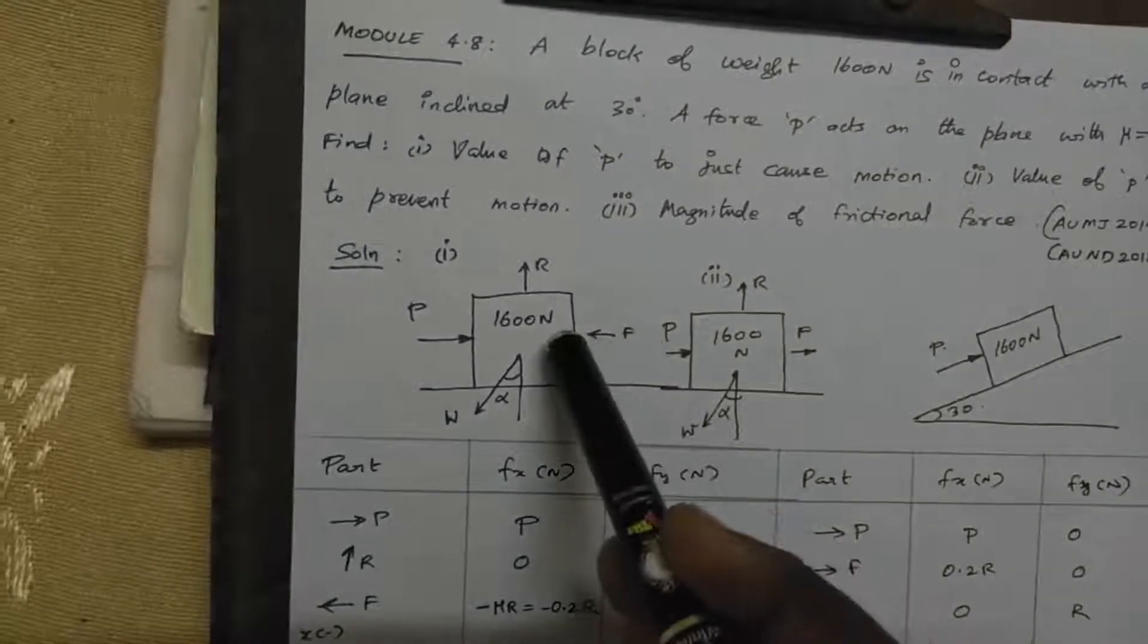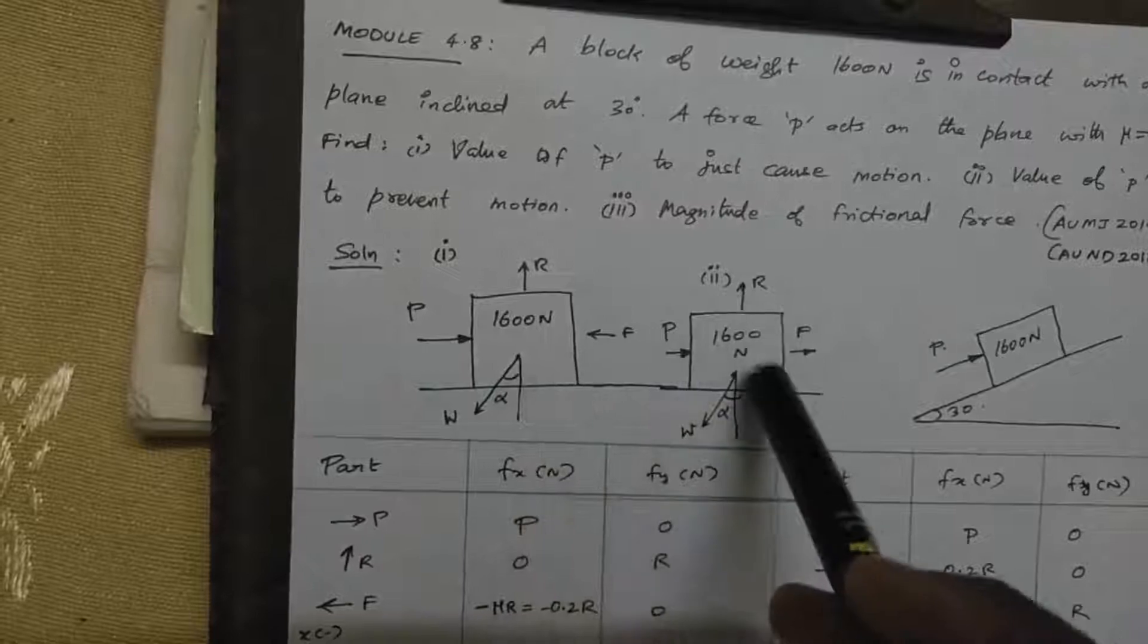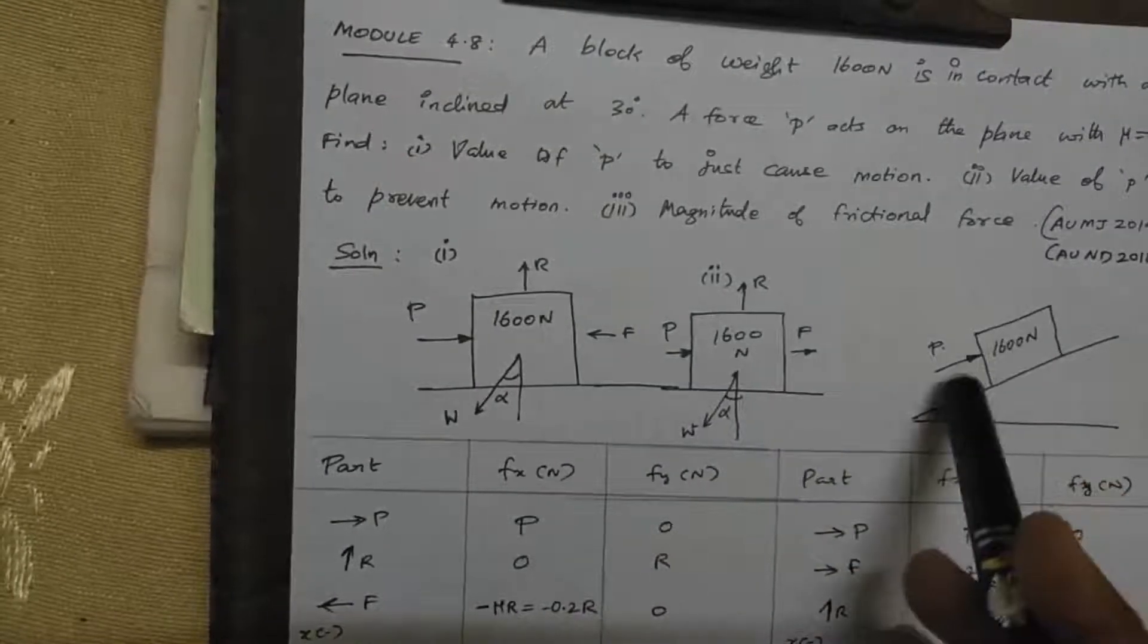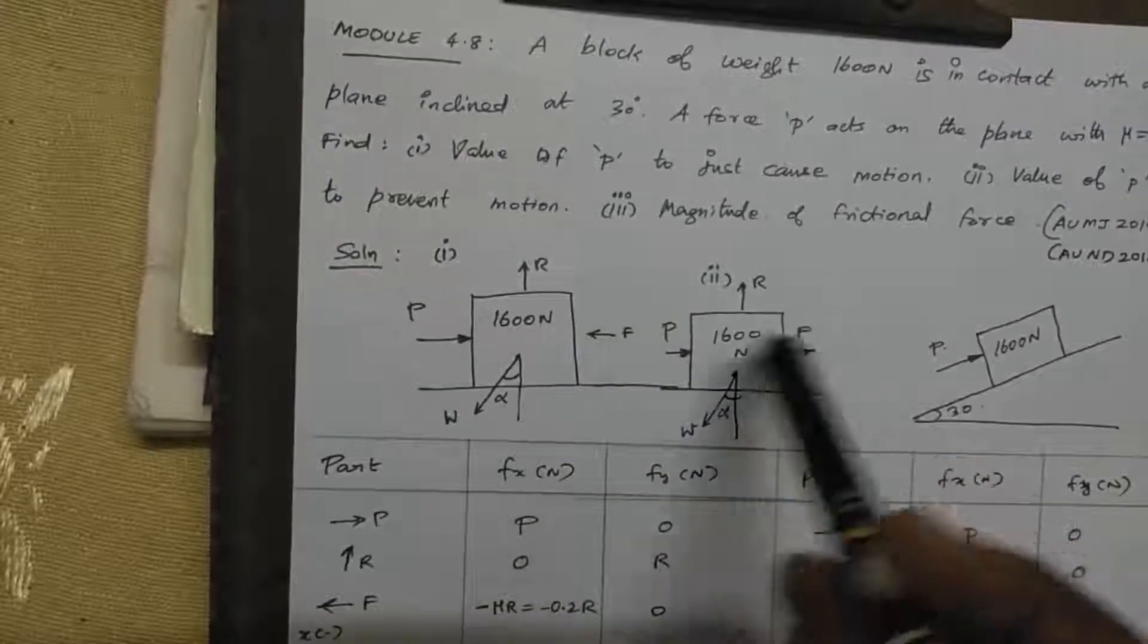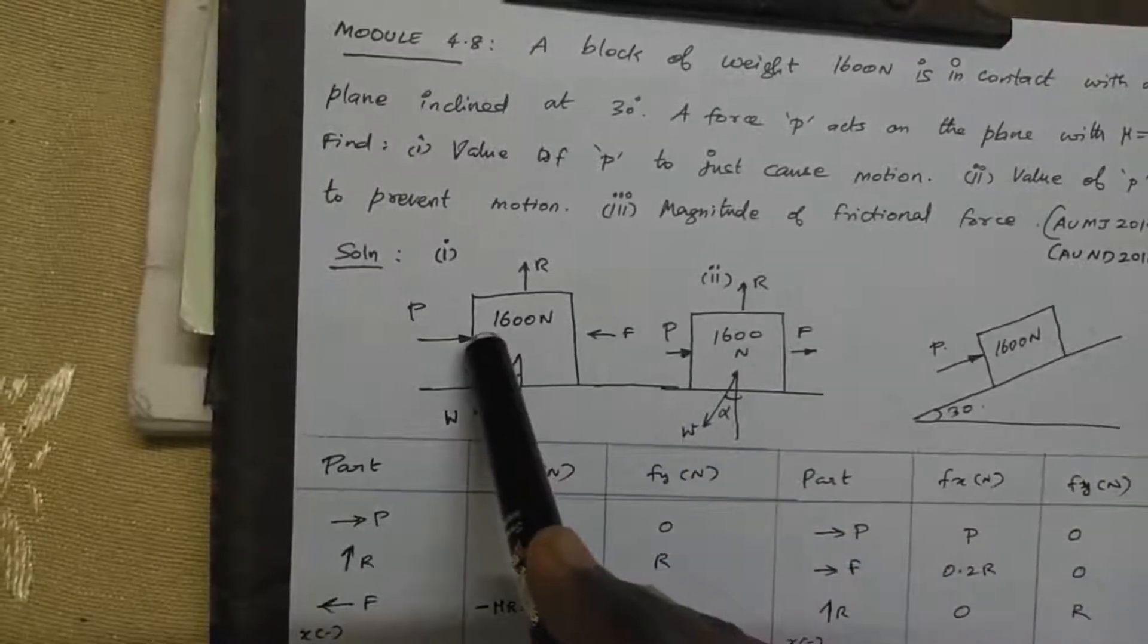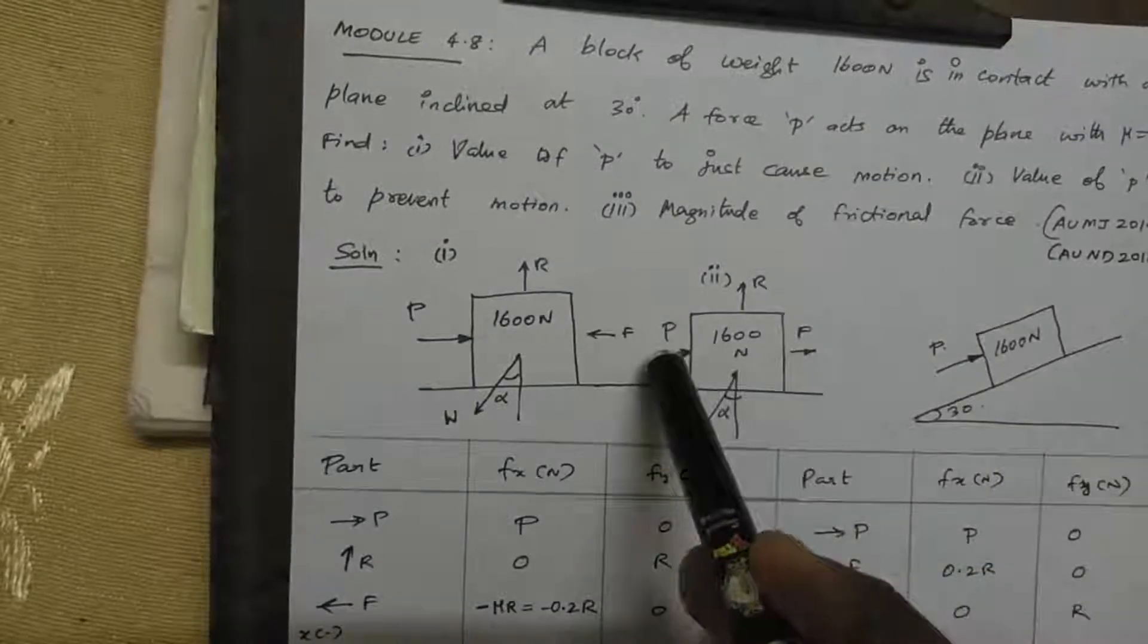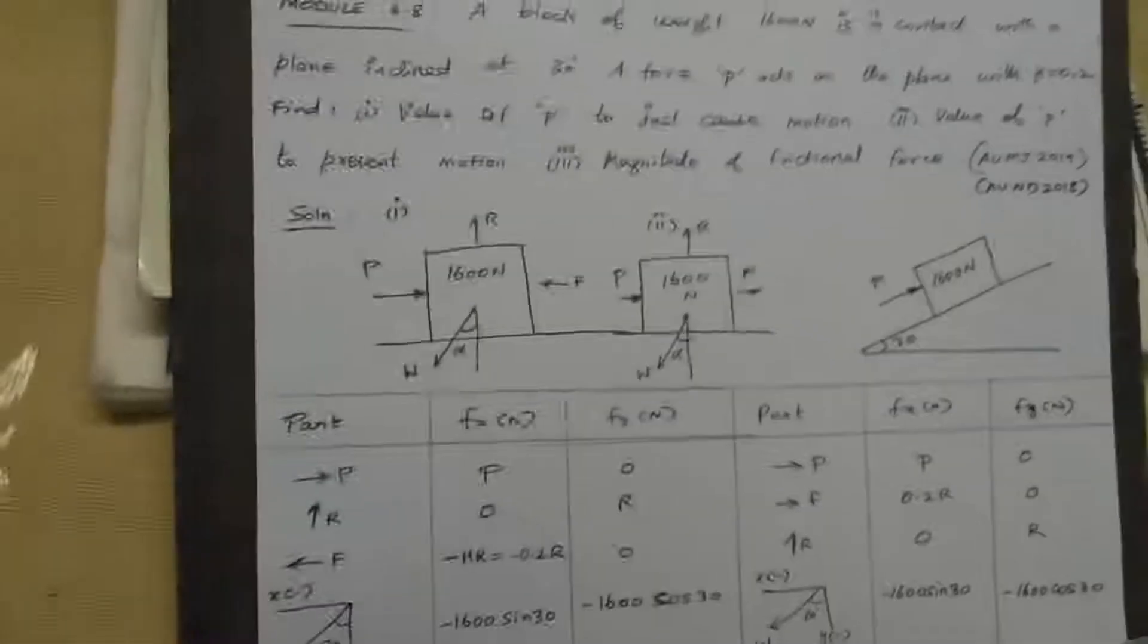Friction will be opposite to applied motion. The capital P is going upward, so the friction is going opposite, downward. For the second condition, at the stopping point, it is against the friction.